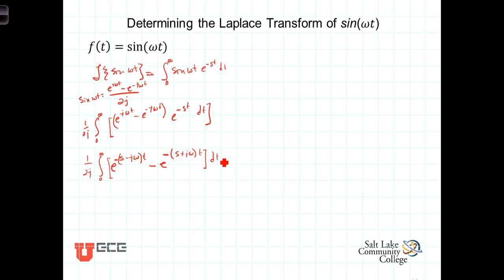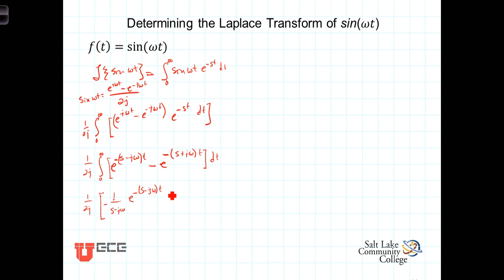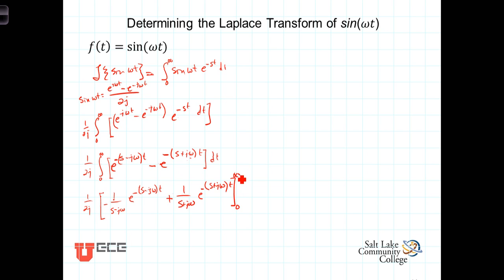Now we can perform that integration — it's basically the integral of e to the at, which gives 1 over a times e to the at. With the 1 over 2j still out front, we get negative 1 over s minus j omega times e to the minus s minus j omega t, plus 1 over s plus j omega times e to the minus s plus j omega t, evaluated at the limits.